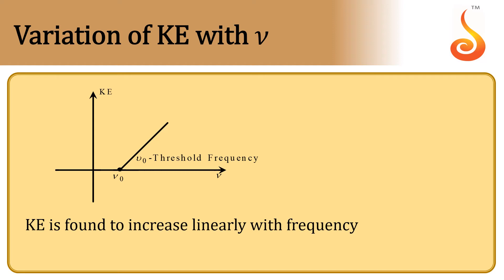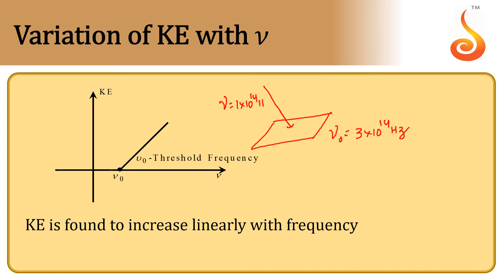Variation of kinetic energy with frequency. To understand this, let me take an example. If there is a metal whose threshold frequency is 3×10¹⁴ Hz, and if the light of frequency 1×10¹⁴ Hz is incident, what happens? Can we observe the photoelectric effect?